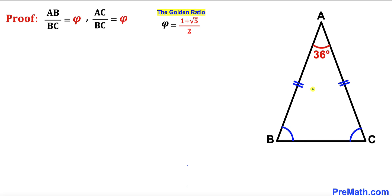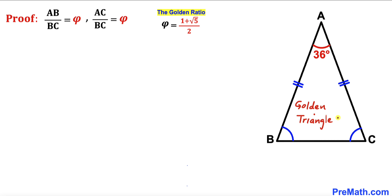Welcome to PreMath. In this video we have got an isosceles triangle ABC such that angle BAC is 36 degrees, and side length AB is equal to side length AC. Our task is to show that this given isosceles triangle is a golden triangle. In other words, we are going to show that the ratio AB to BC equals phi, and likewise the ratio AC to BC is phi as well, where phi is the golden ratio and equals 1 plus square root of 5 divided by 2.